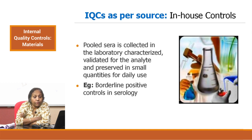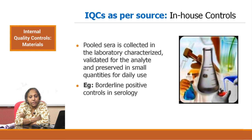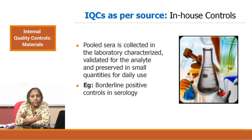The second kind of classification is commercial versus in-house controls. In-house controls are pool sera collected in the laboratory, characterized and validated for the analyte, preserved in small quantities, and used in the daily monitoring of the analytical system. One example is making borderline positive controls in serology. Positive and negative controls in qualitative systems are generally easy to come by, but making a borderline control is difficult because you need to understand where the cutoff of a certain test is. Making borderline controls is a very essential part of your laboratory system in serology. The Labs for Life QC Soft has a statistical tool which can enable you to make your own borderline positive controls and characterize and validate them for your laboratory use, with a user manual included.